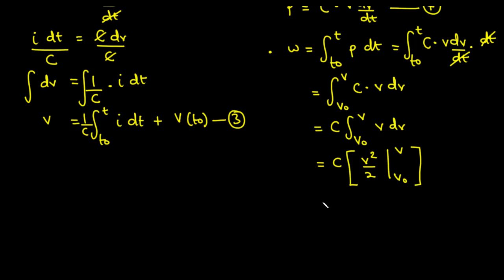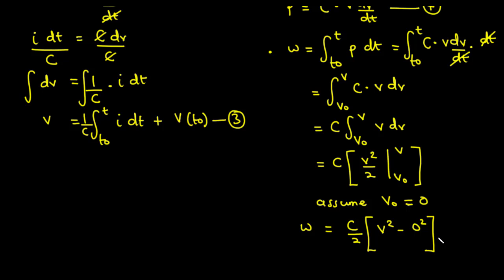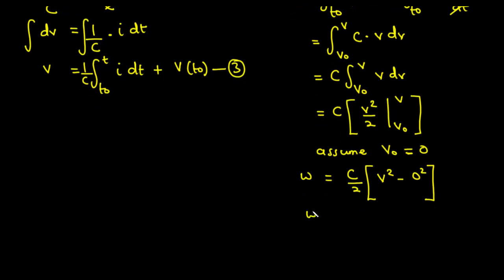We assume the initial voltage across the capacitor v₀ is equal to zero. Applying the limits, we get w = (C/2) times (v² minus 0²), which simplifies to w = (C/2)·v². This can be written as w = ½·C·v². We call this equation five — the energy stored in a capacitor.